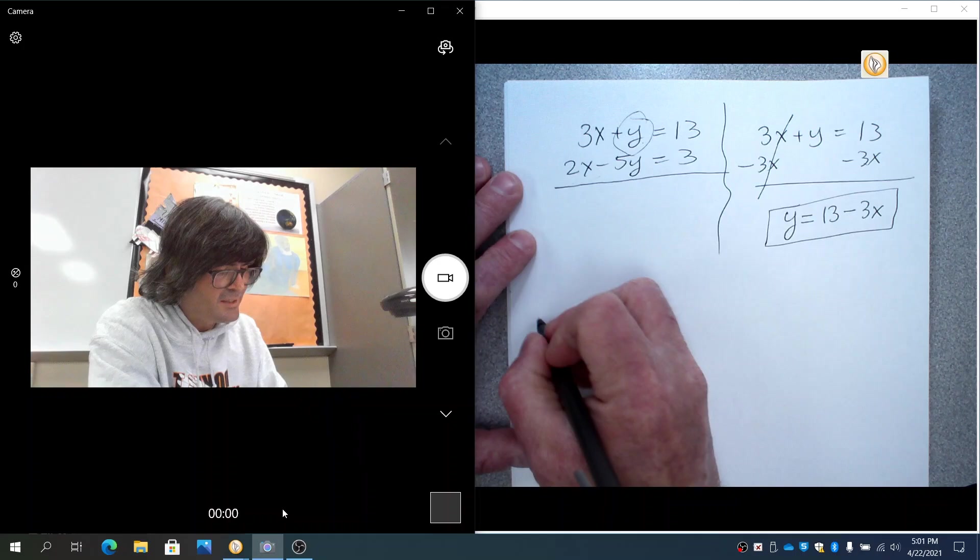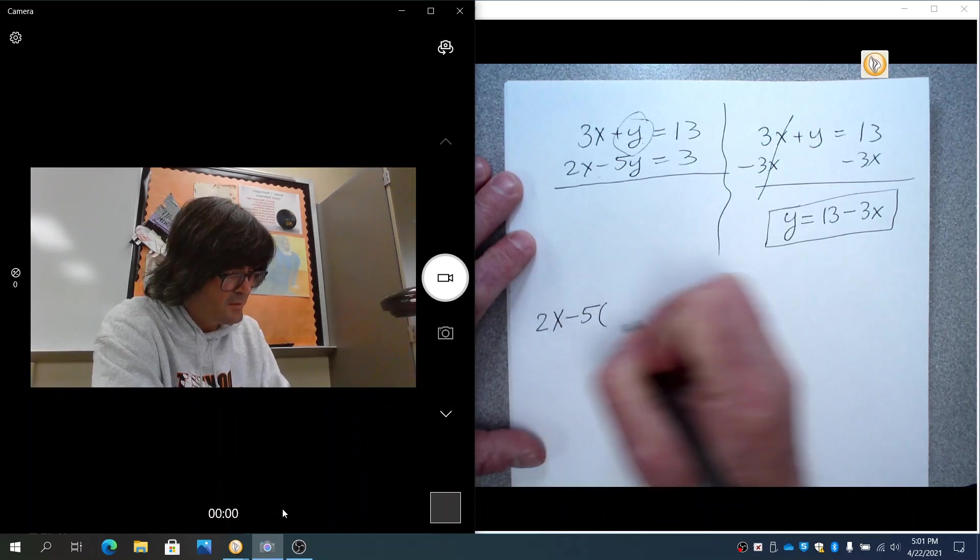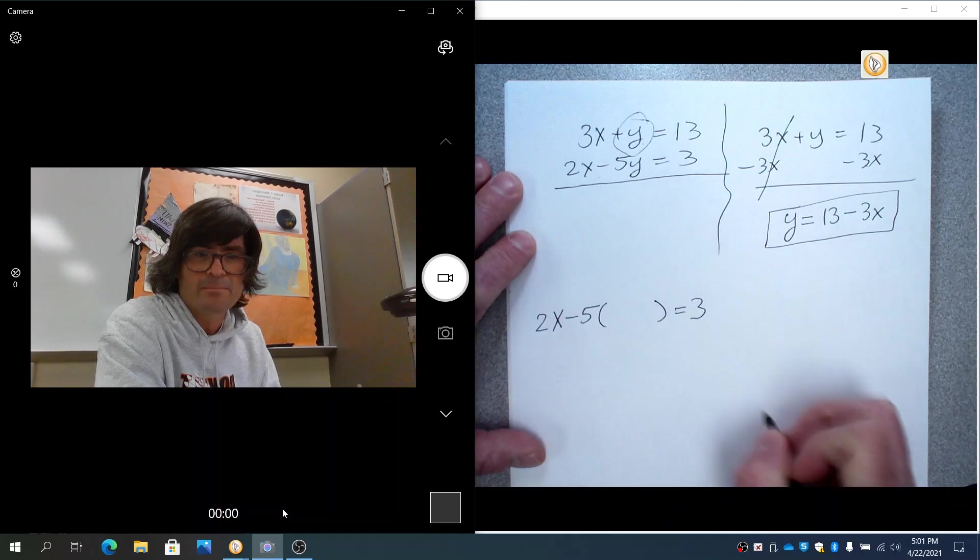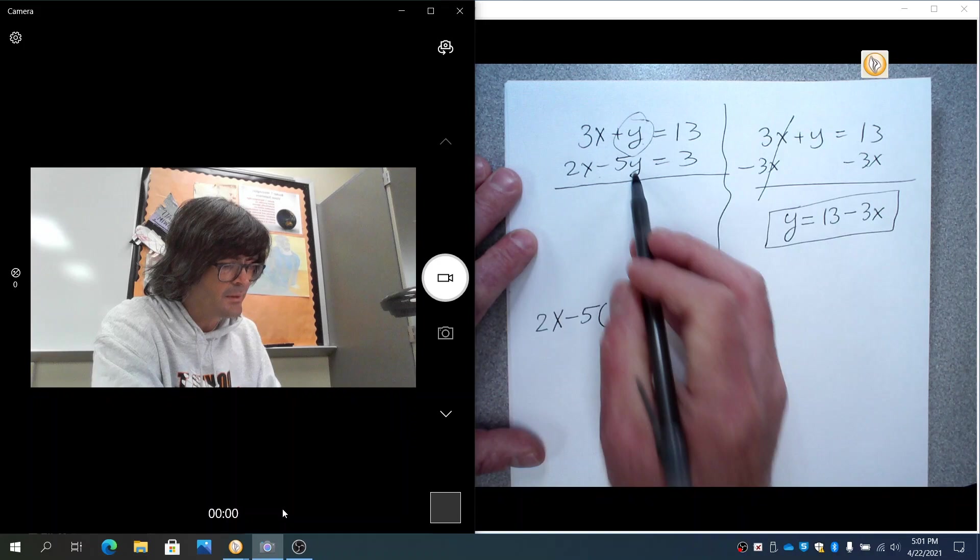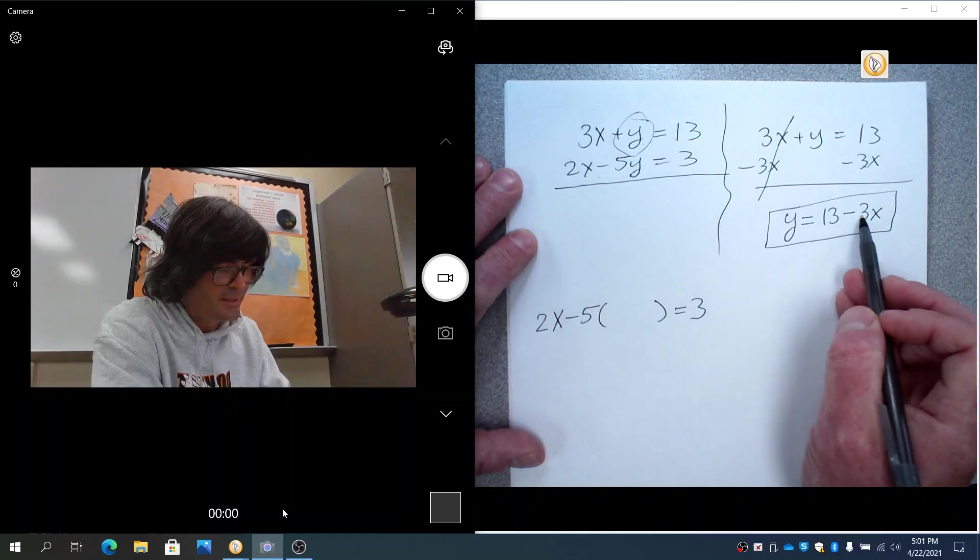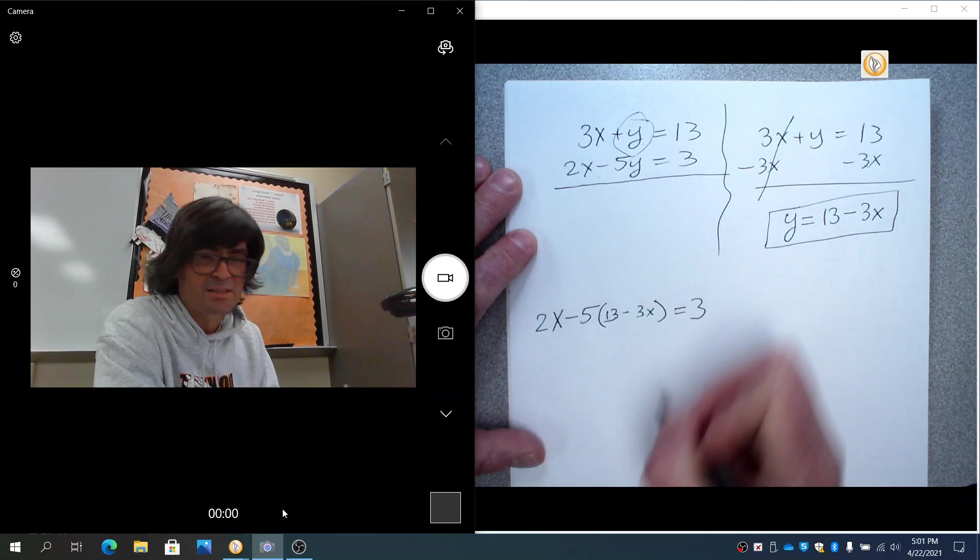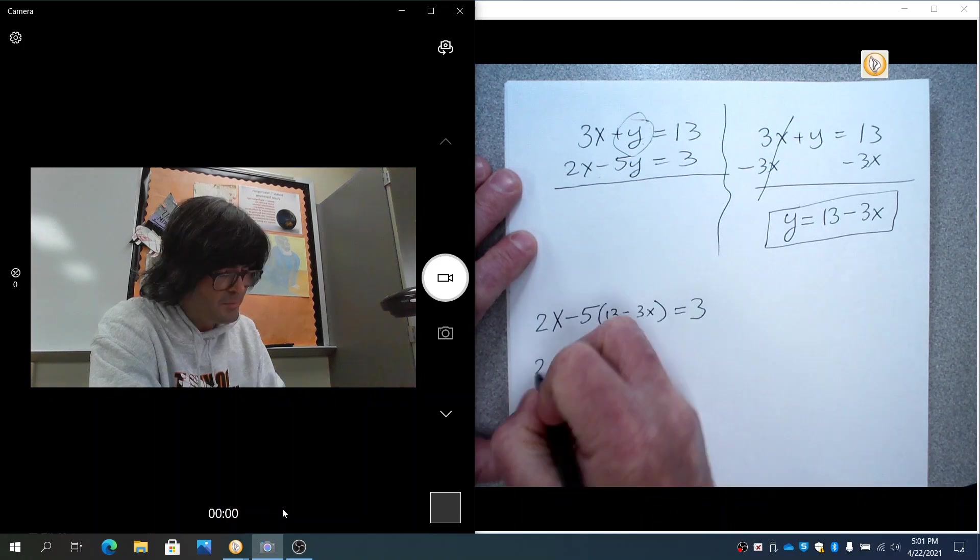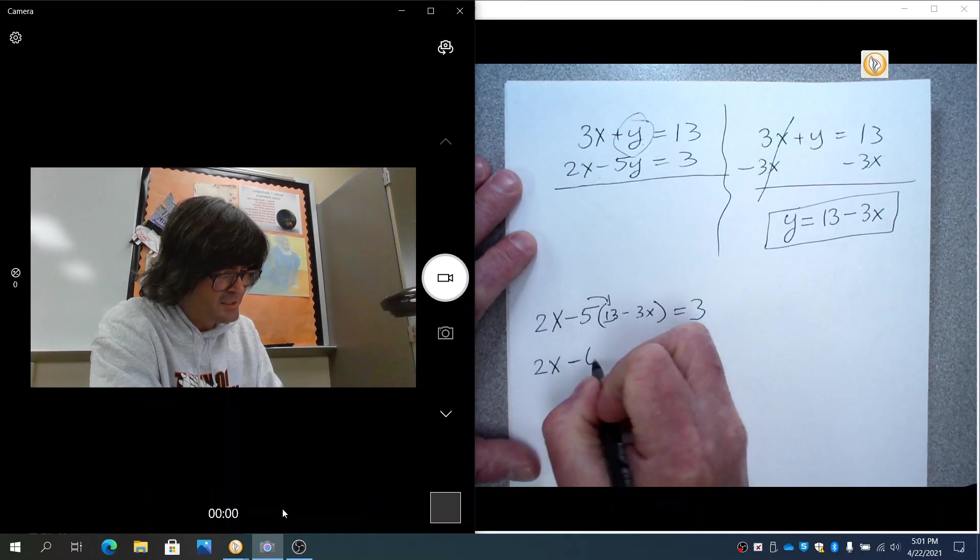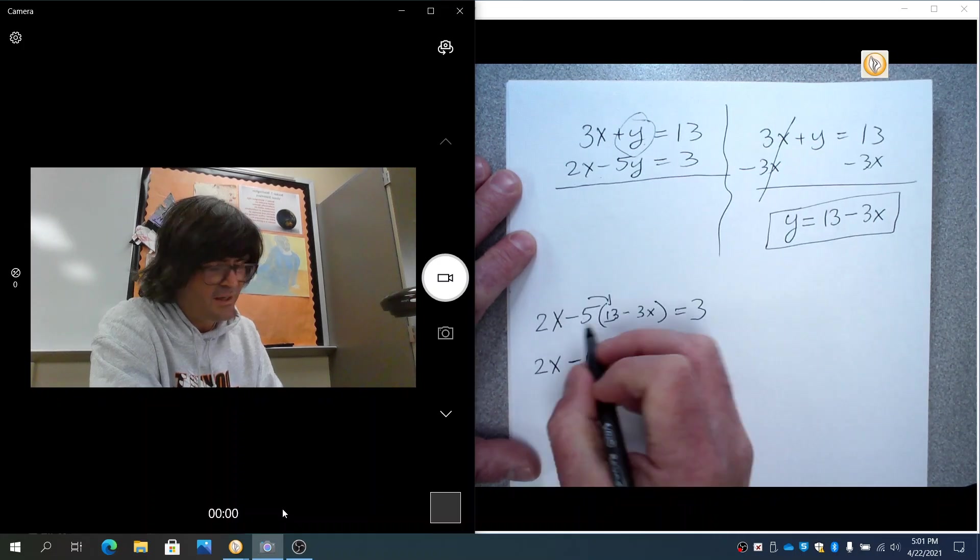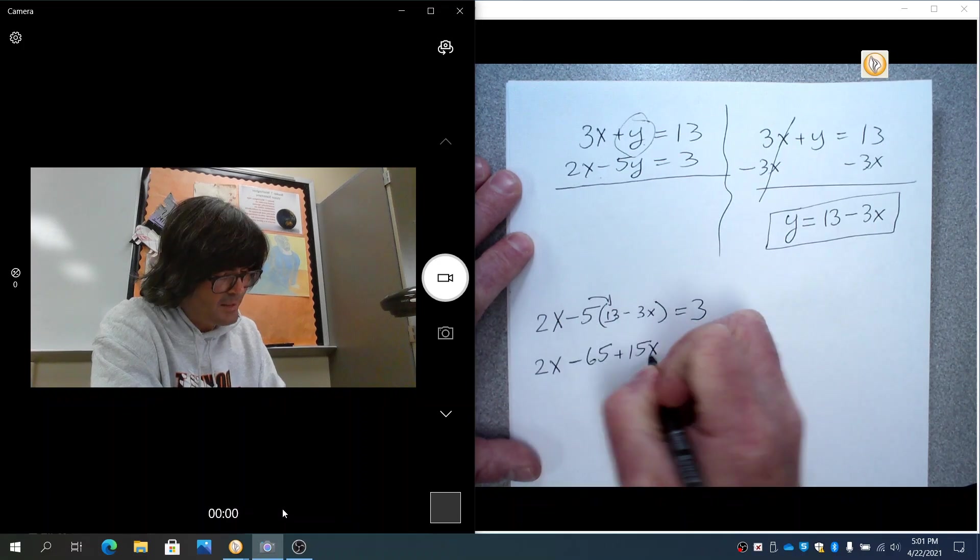Now I'm going to take my other equation, which was 2x minus 5y equals 3. And we're going to take y. Instead of y going here, y is the same as 13 minus 3x. So that's going to go right there, 13 minus 3x. And now we can use my distributive property. Minus 5 times 13 is minus 65. Minus 5 times minus 3x is 15x. And that equals 3.